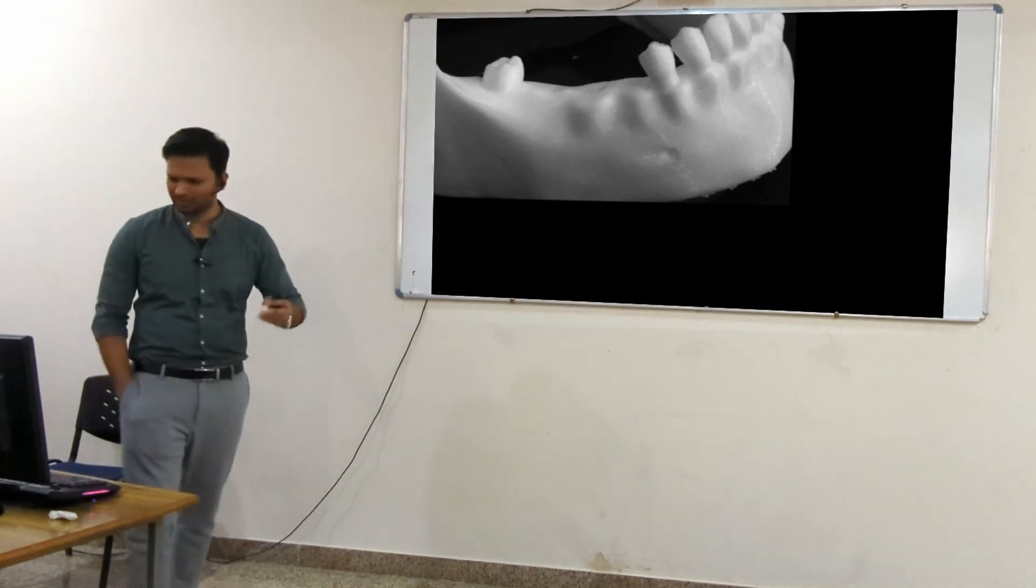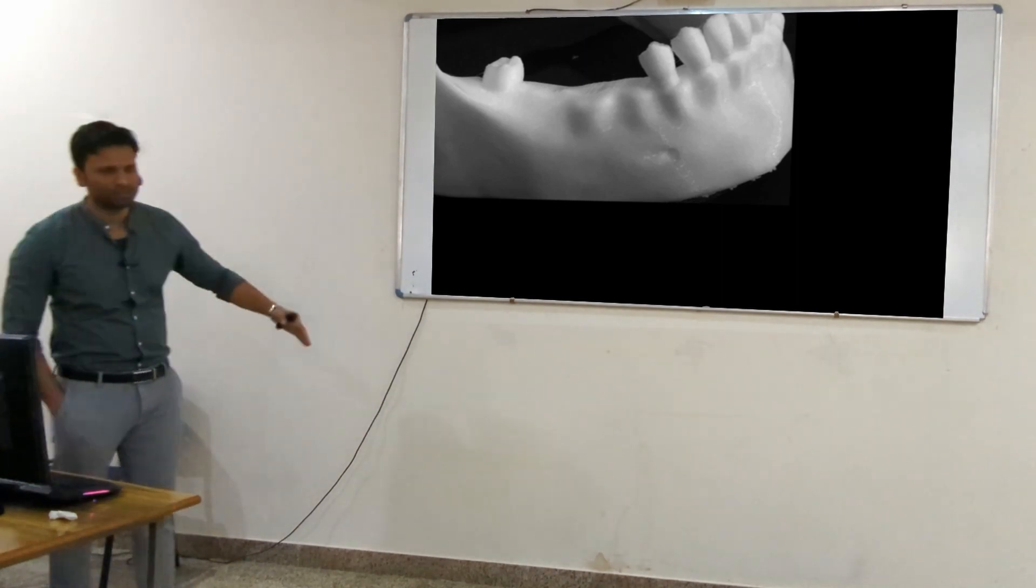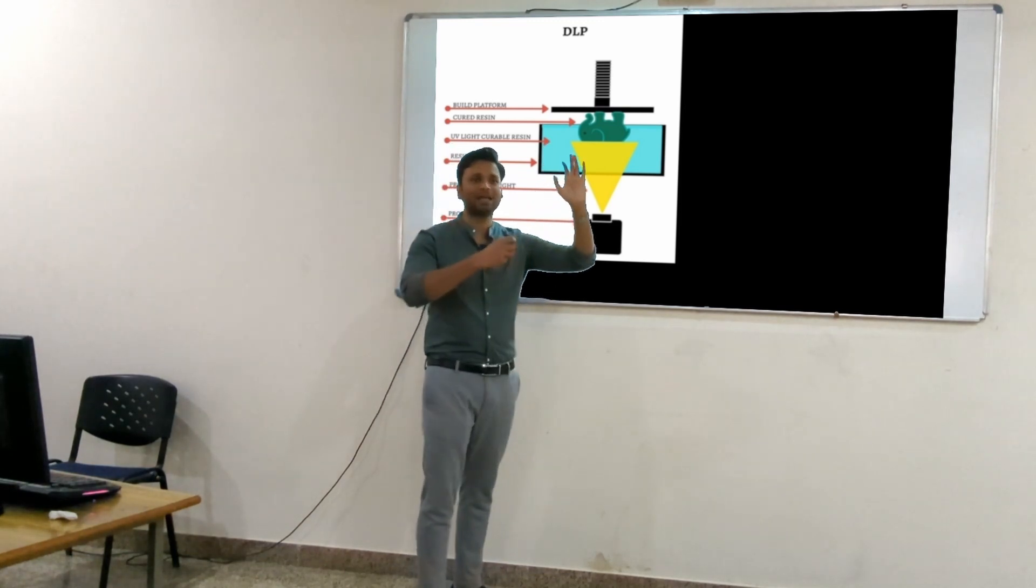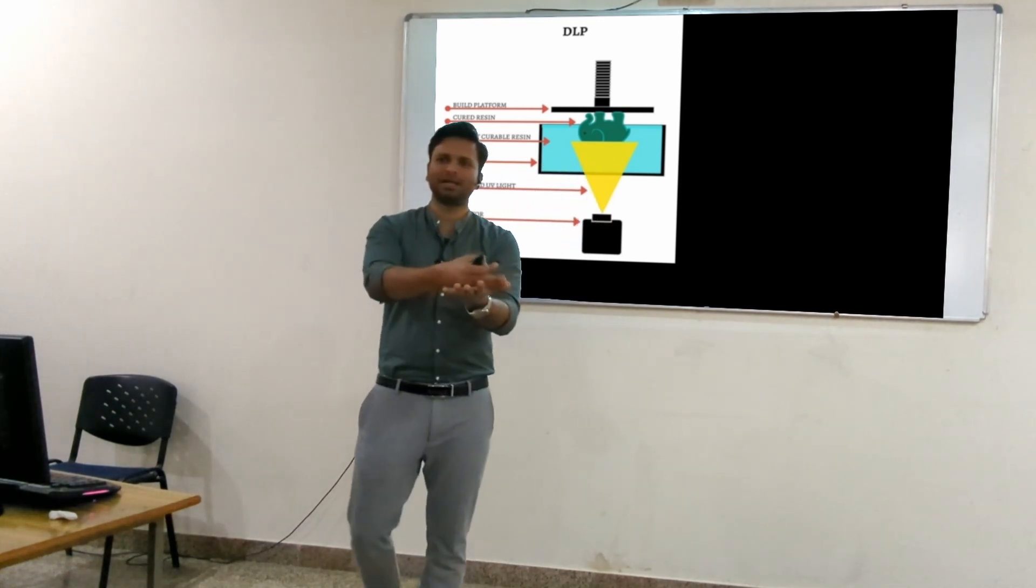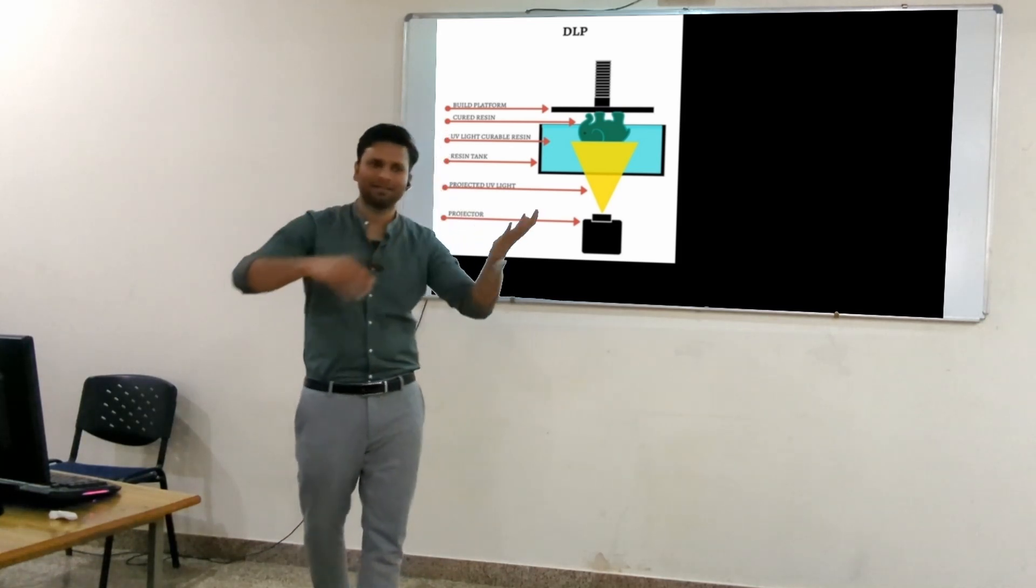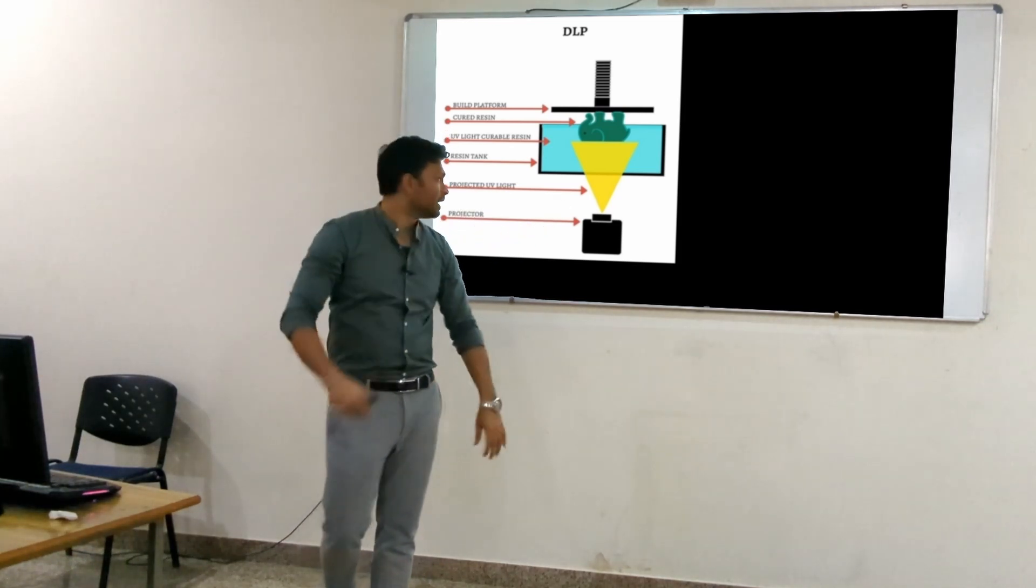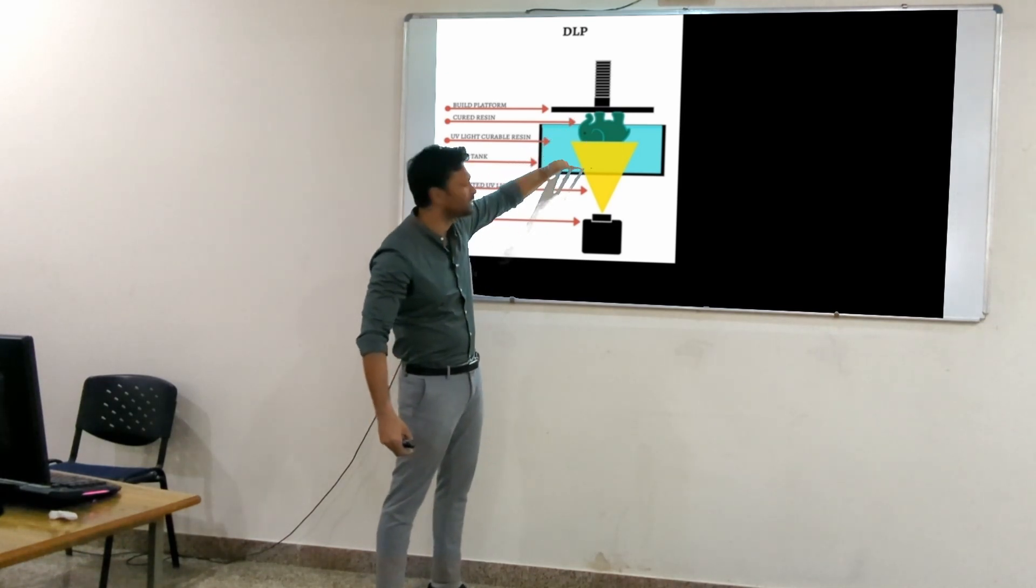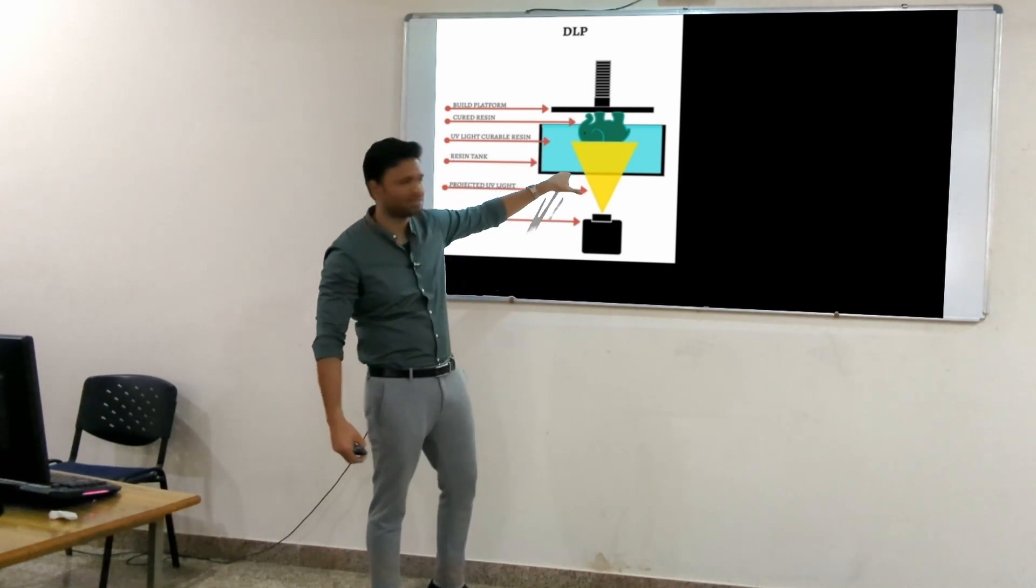Then we have another common method used in dentistry - DLP printer. If you saw in the FDM, there was a build plate on top and the print was being done and the plate was moving. In FDM, the plate moved down. In this, the plate moves up.